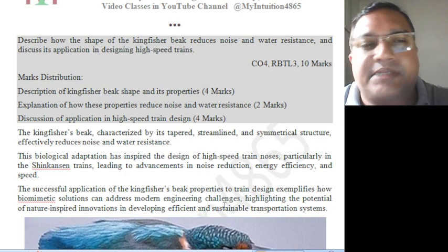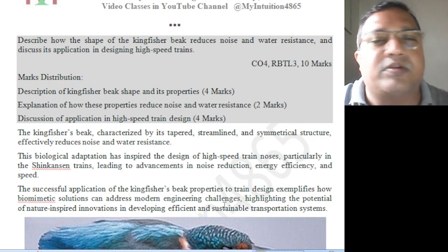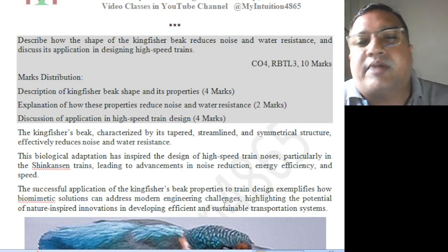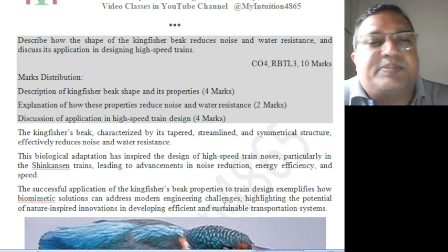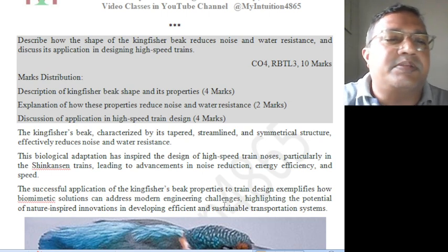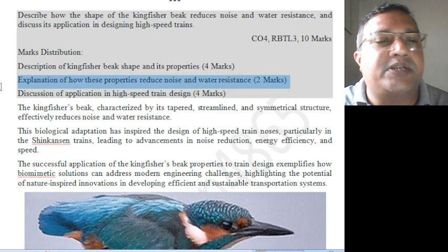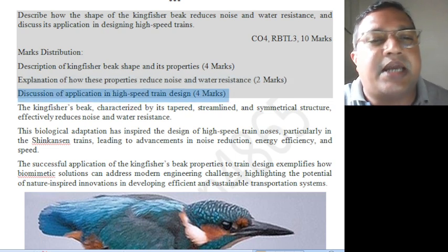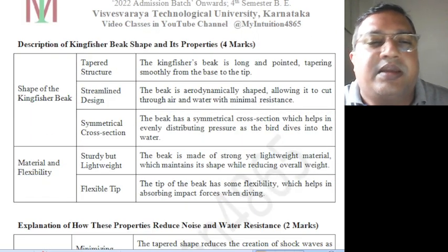Now we move on to the question that has already been circulated: describe how the shape of the kingfisher beak reduces noise and water resistance, and discuss its application in designing high-speed trains. Description of kingfisher beak shape and properties carries four marks, explanation of how these properties reduce noise and water resistance carries two marks, and discussion of application in high-speed train design carries four marks.